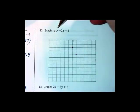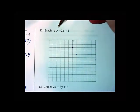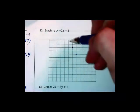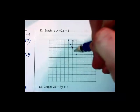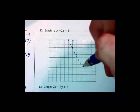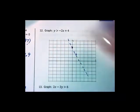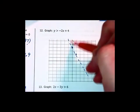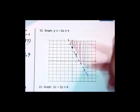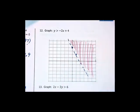Because the equal to is missing in the original problem, this will be a dotted line that we are going to be graphing here. When it is in slope intercept form as this is, the greater than tells us that we are going to be shading above this line.